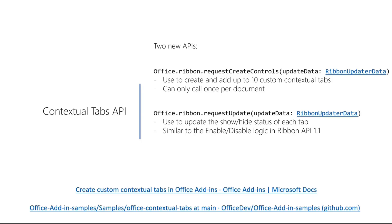Implementation is very similar to enable/disable. There are two APIs: the first creates and adds custom contextual tabs — all done through the API with no manifest changes required, so you can avoid resubmission of your add-in. The second API works similarly to the enable/disable logic in Ribbon API 1.1, and you use it to show or hide each tab depending on the user's context. Links on this slide go directly to the documentation — the same as during the preview phase — and to a sample showing how this is implemented in your add-in.